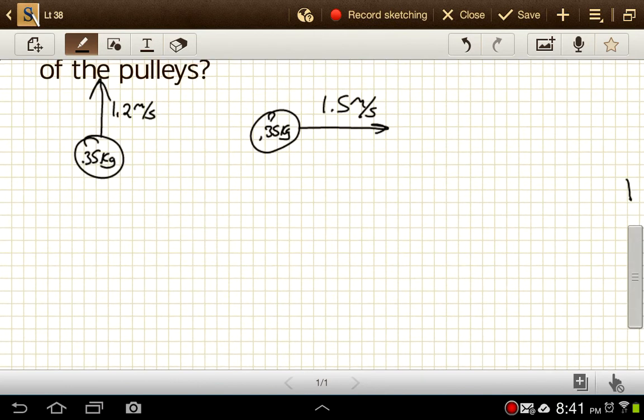So, first off, momentum for this guy. Momentum as a vector is going to be 0.35 kilograms, just a scalar quantity, times 1.2 meters per second, and that's to the north. So I'll just put a little note there.